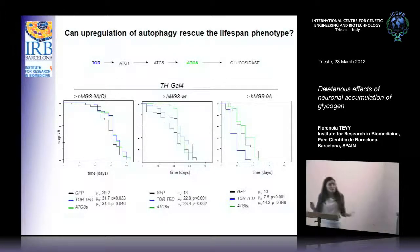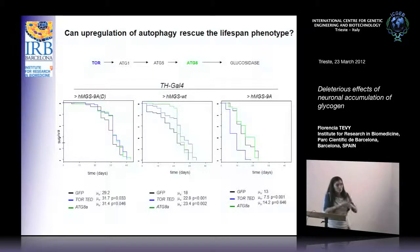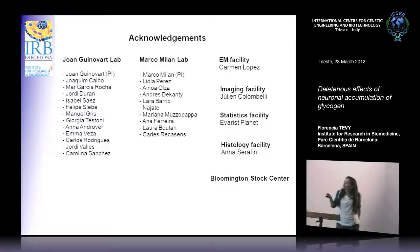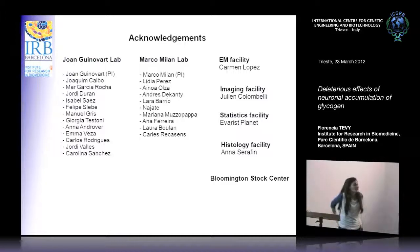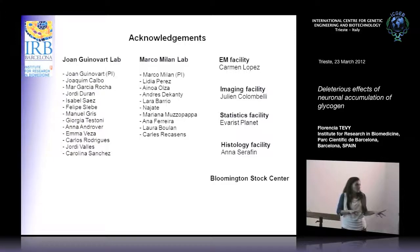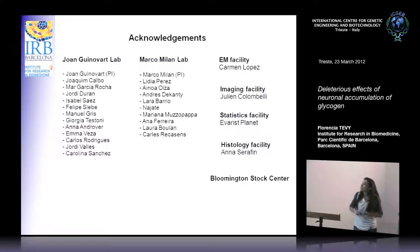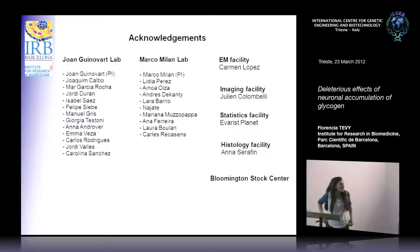The take-home message of this talk is that glycogen accumulation, per se, induces neurodegeneration in a dose-dependent manner. I want to acknowledge both labs — that of Joan Guinovart and Marco Milan — as all the work presented is in collaboration with people doing cell culture, mice, and biochemistry. Thanks to all the facilities that helped complete this work as quickly as possible. Hope you enjoyed it.